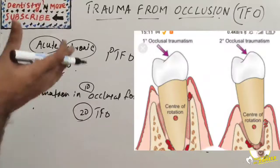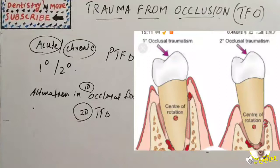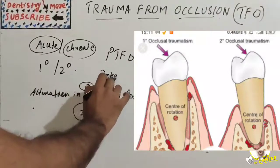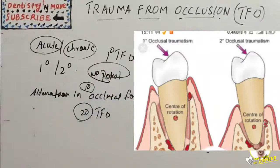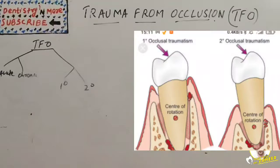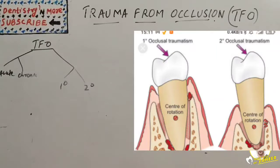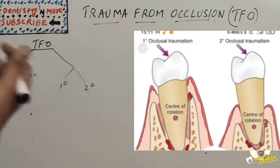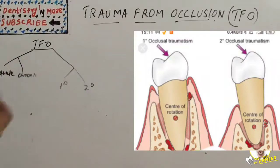Changes produced by primary trauma do not alter the level of connective tissue attachment and do not initiate pocket formation — there is no pocket. Secondary TFO occurs when the adaptive capacity of the tissues to withstand occlusal forces is impaired due to bone loss resulting from marginal inflammation. Previously well-tolerated occlusal forces become traumatic because of the change in bone pattern or periodontal structure.